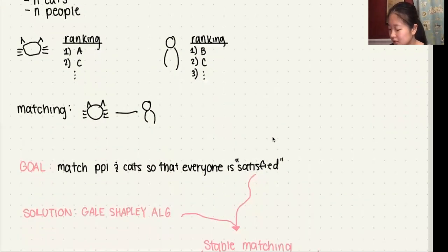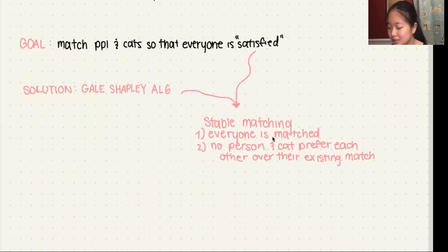The solution to this is the Gale-Shapley algorithm. Satisfied means that everyone is matched, so every cat gets adopted, and also that no person and cat prefer each other over their existing match. It's not the case where a person and a cat would want to leave their matches and be in their own match.